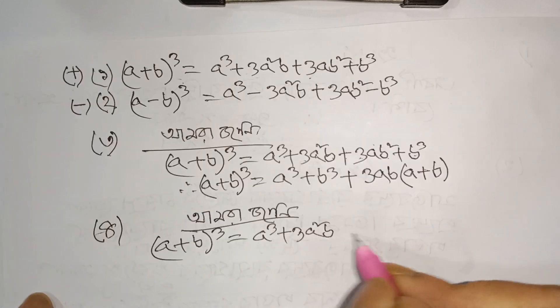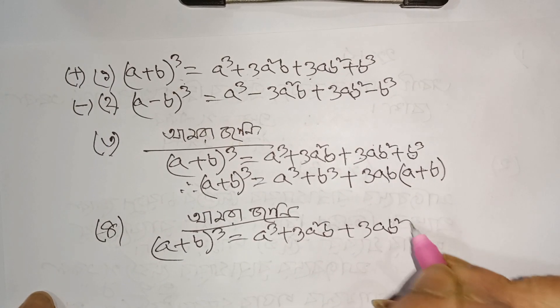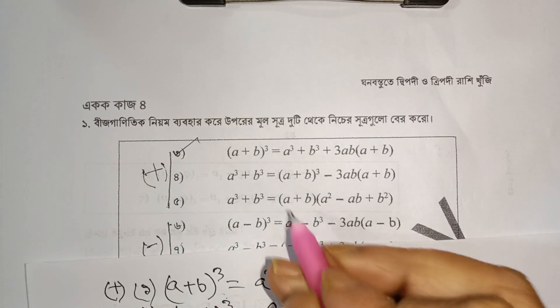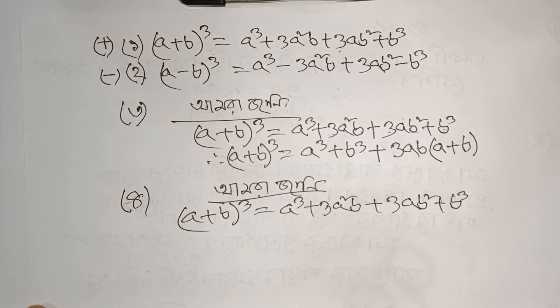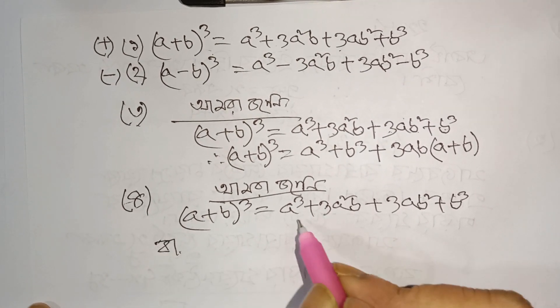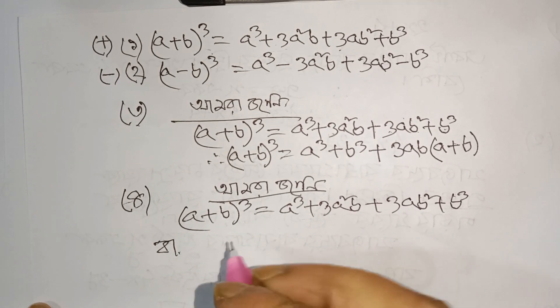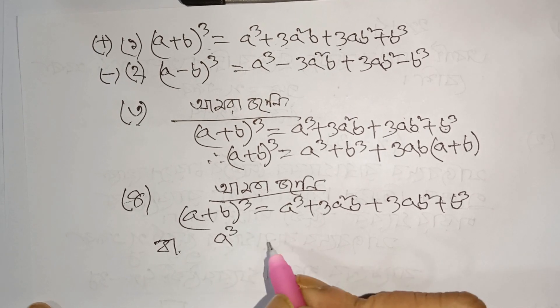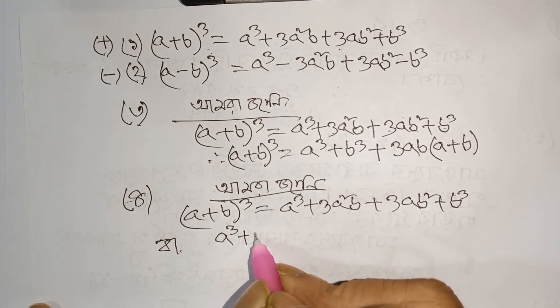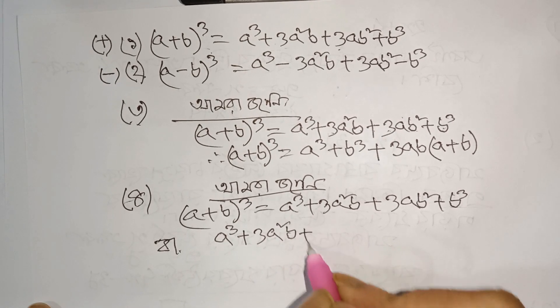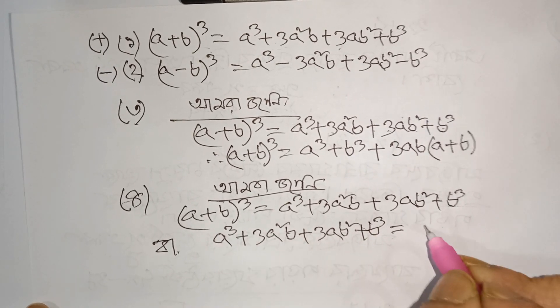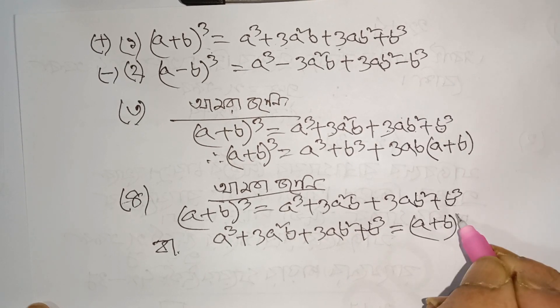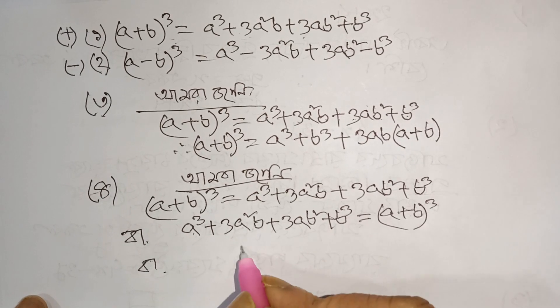a square b plus three a b square plus b cube. So the fourth number formula shows a plus b whole cube. a cube plus b cube — here we take two terms. So we do the calculation step by step, putting it minus for the beta calculation, all the way through.